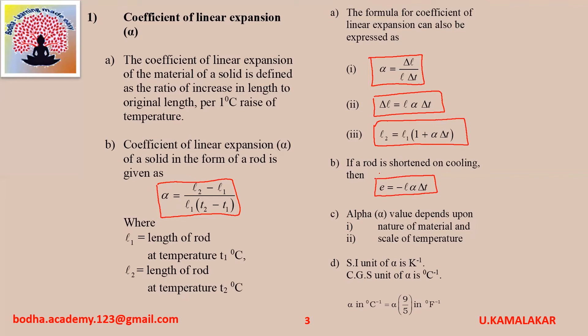The values of alpha depend upon the nature of material and scale of temperature. SI unit of alpha is per Kelvin and CGS unit of alpha is per degree centigrade. Alpha in per degree centigrade equals alpha into (9/5) in per degree Fahrenheit.